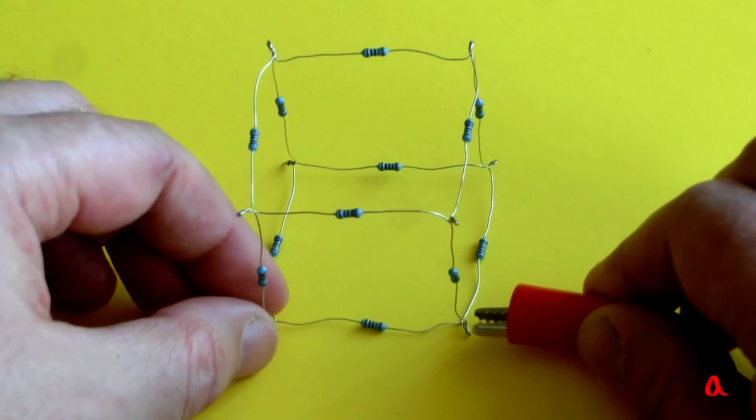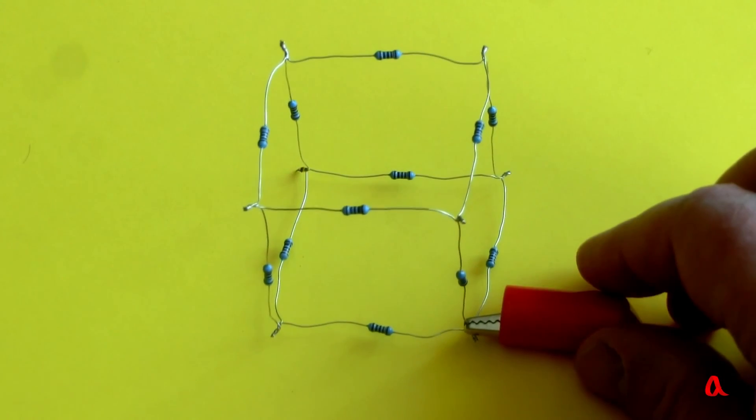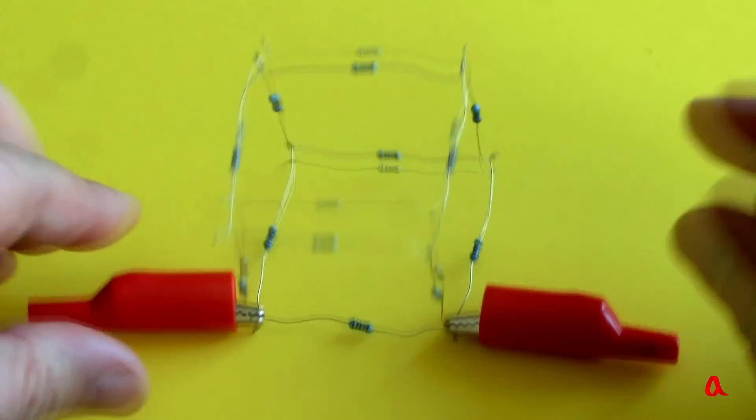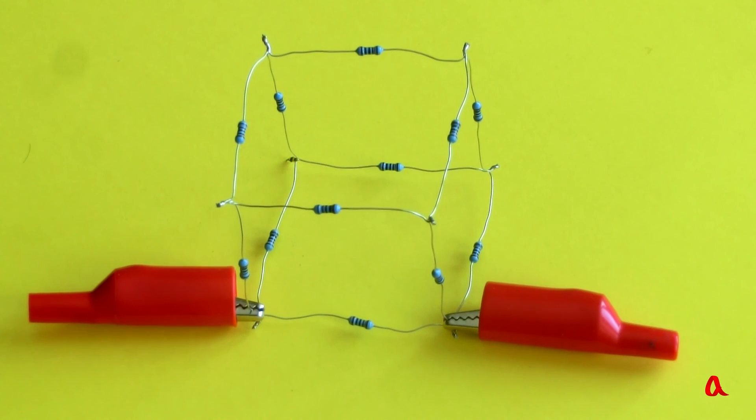Here is a problem to solve on your own. What will be the readings of a multimeter if we connect it to the ends of the same face of the cube? Write your answers in the comments to this video on YouTube.